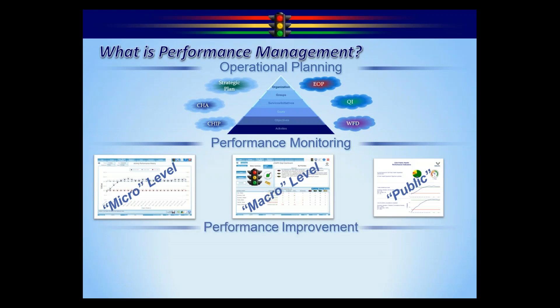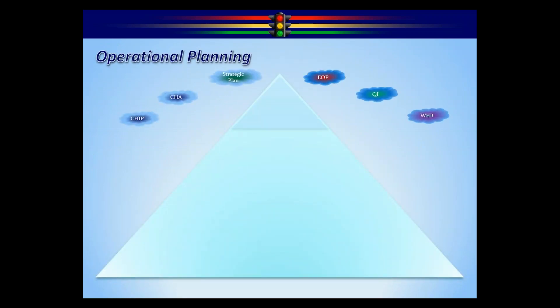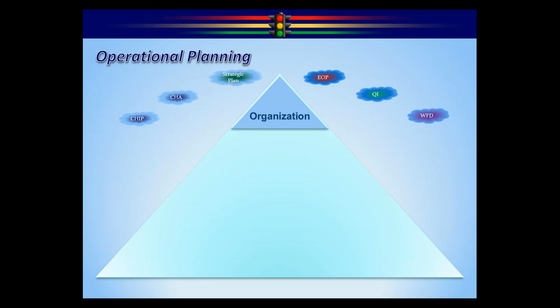The very last step is the performance improvement part. So now you've created the plan, you're monitoring it on several different levels, you're checking it. You make your adjustments, and then you go back into the plan. The way that is structured in the dashboard, we want to give you a hierarchical view, and so we give you this pyramid.